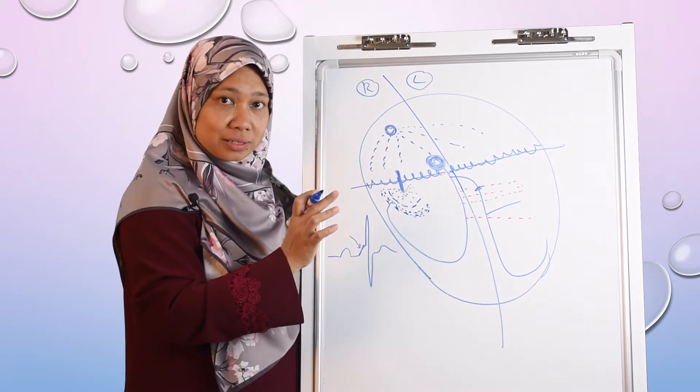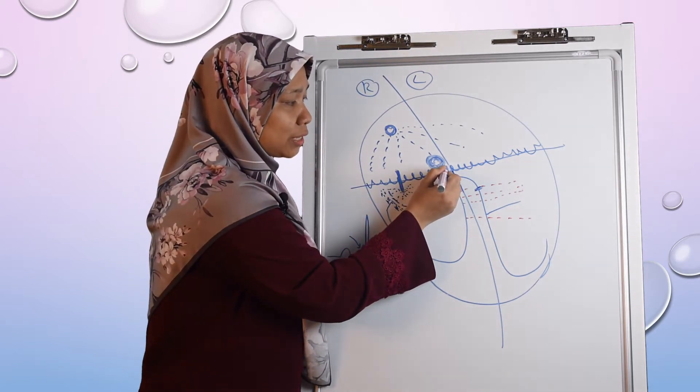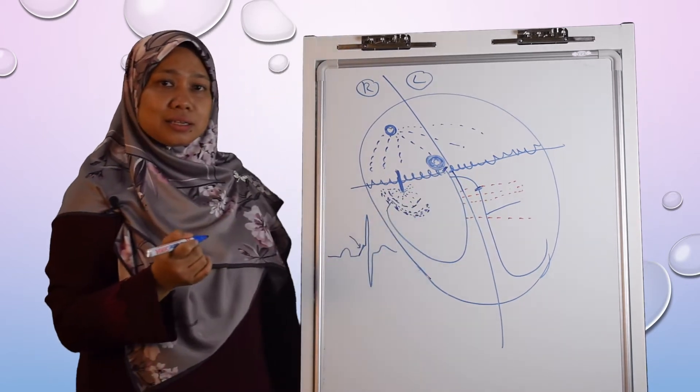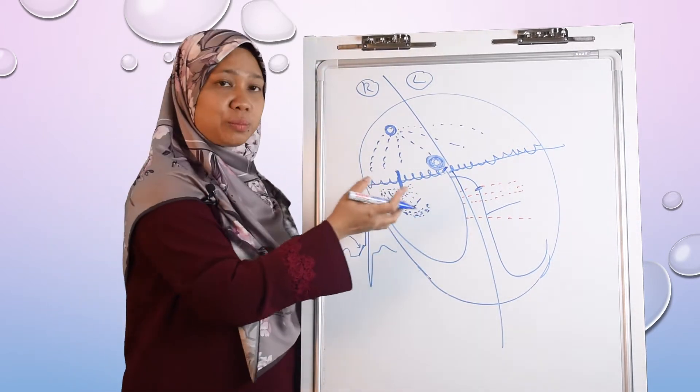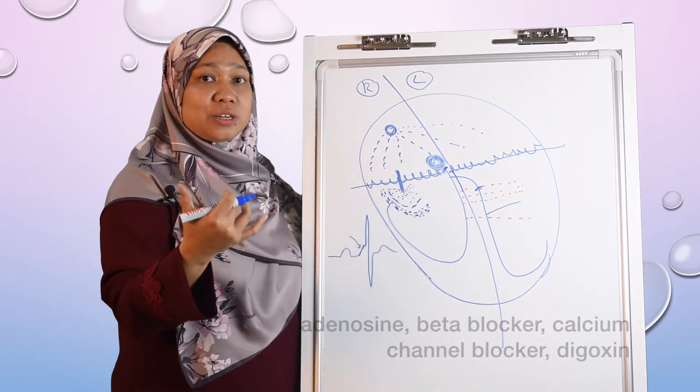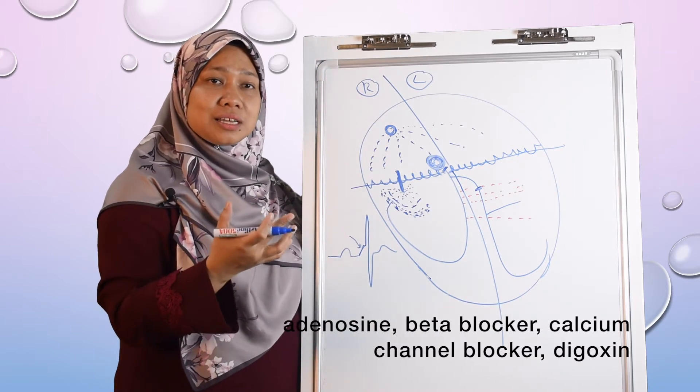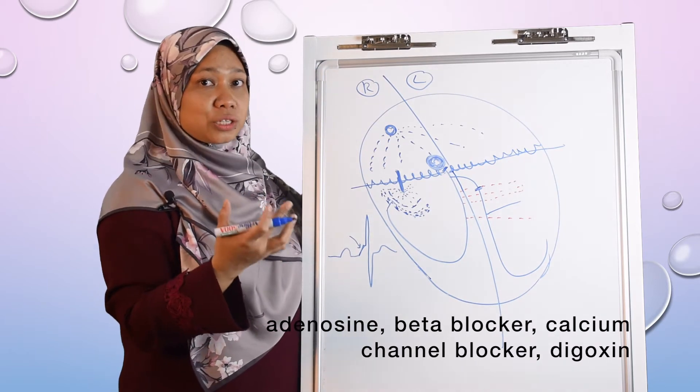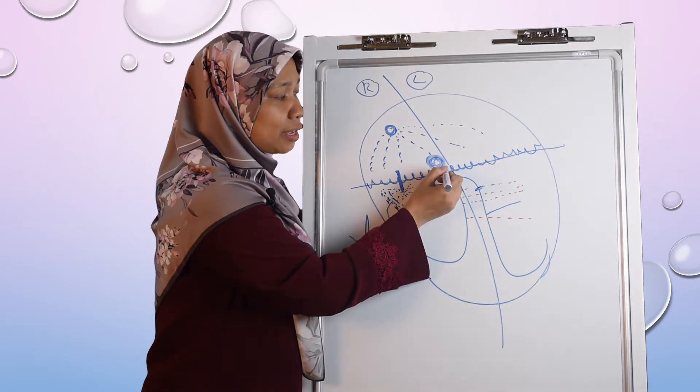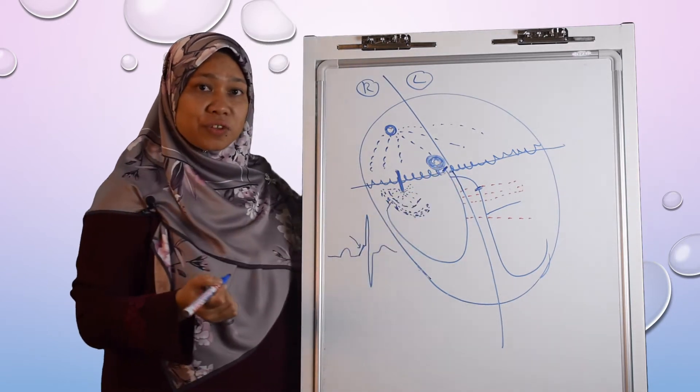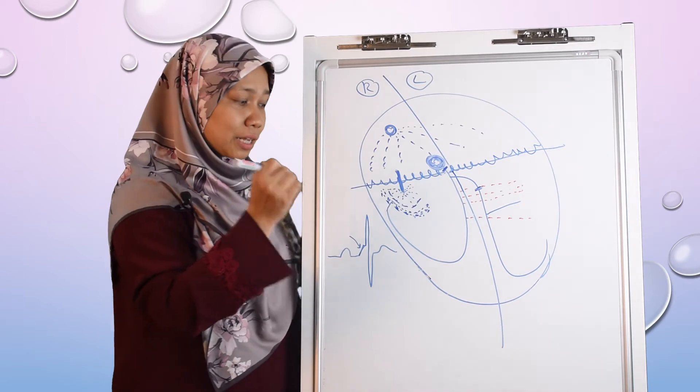However, if there is any block to the AV node, let's say this patient is taking AV node blocking agents like adenosine, beta blocker, calcium channel blocker, or digoxin. These drugs can actually increase the delay in the AV node conduction. So when this happens,